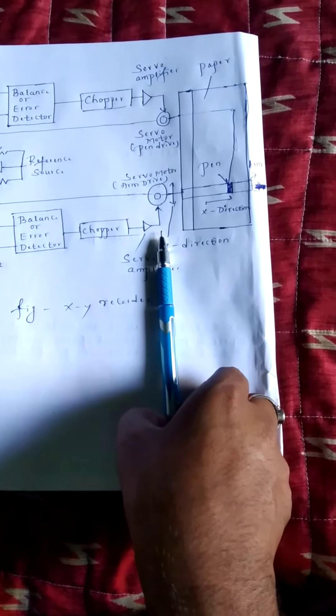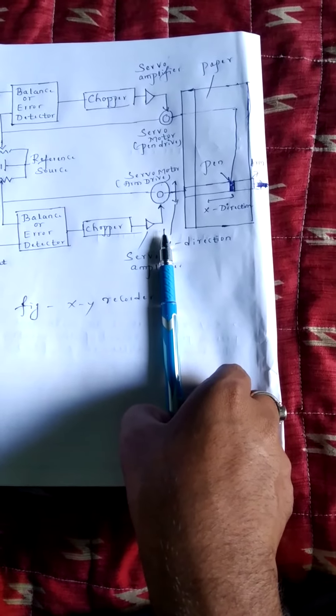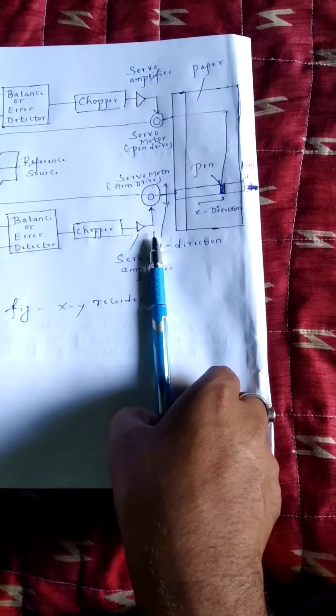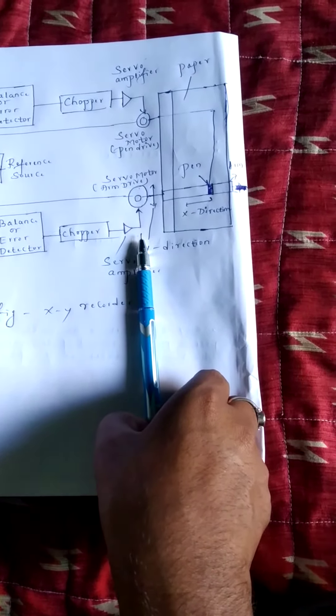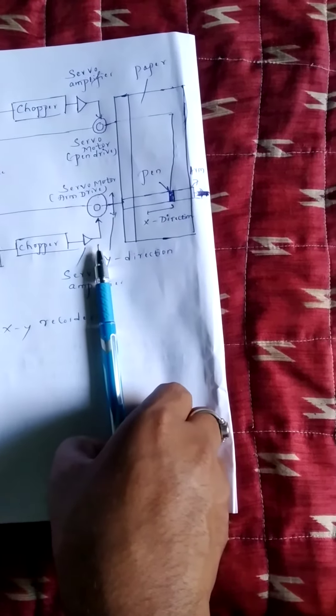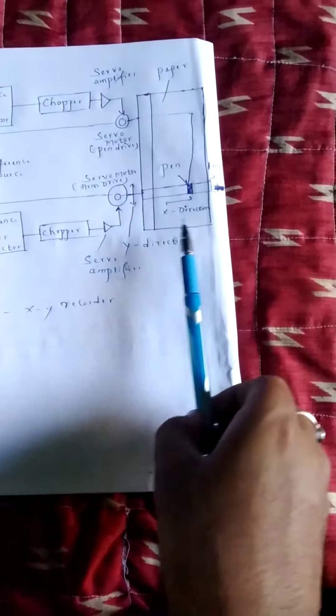The last point, the action described above takes place in both the axes simultaneously. Hence, a record of one physical quantity with respect to another is obtained. The graph paper used is generally squared shaped.